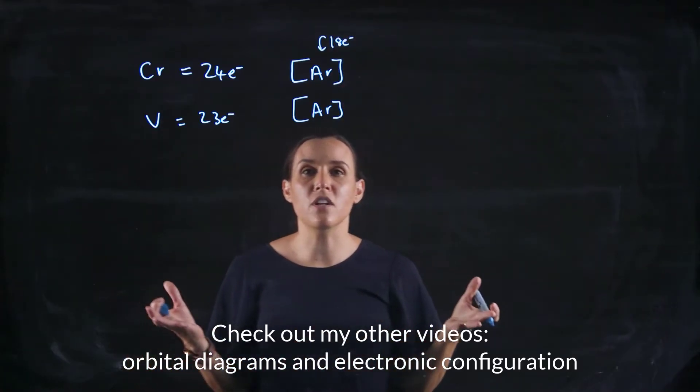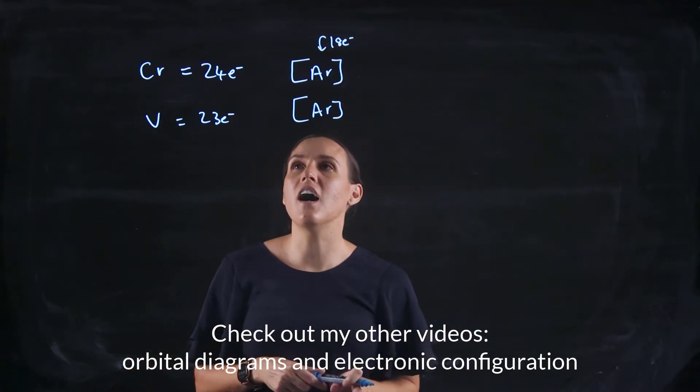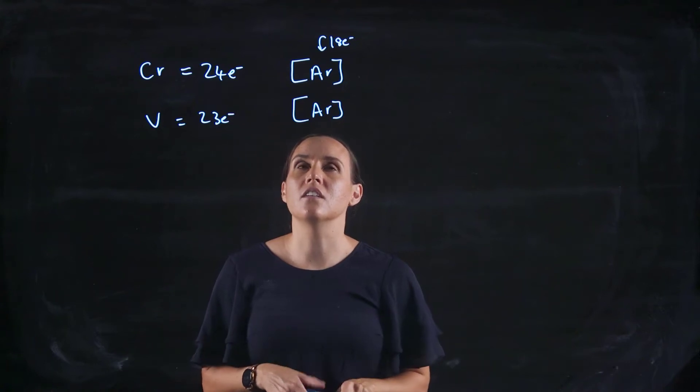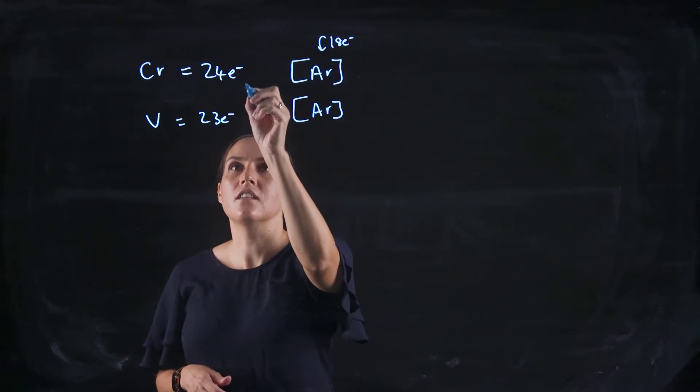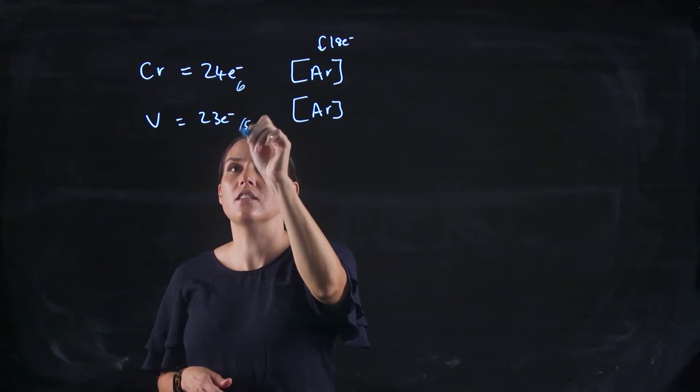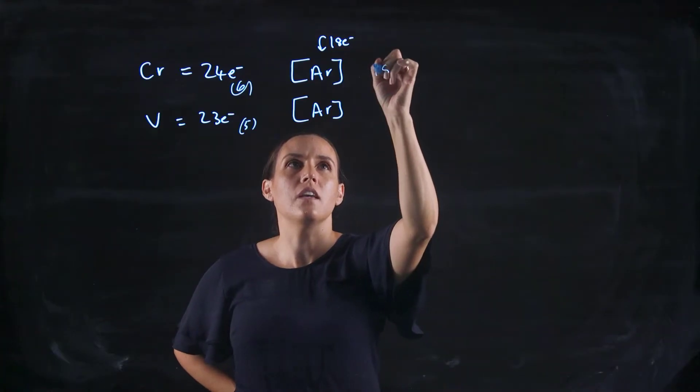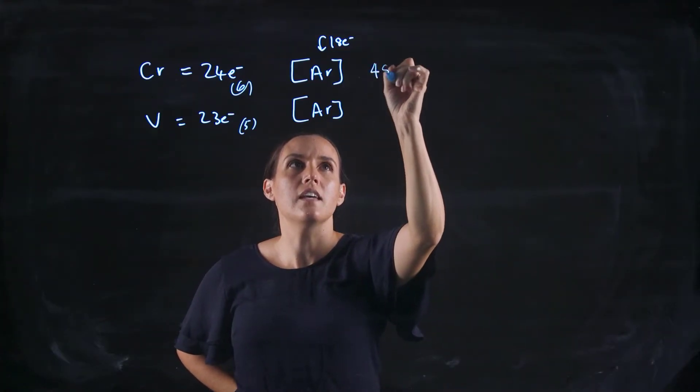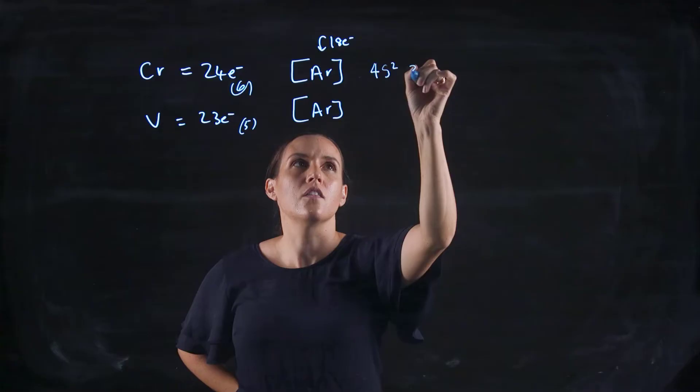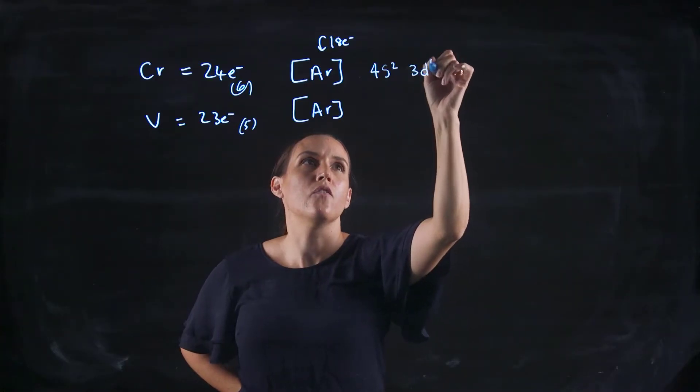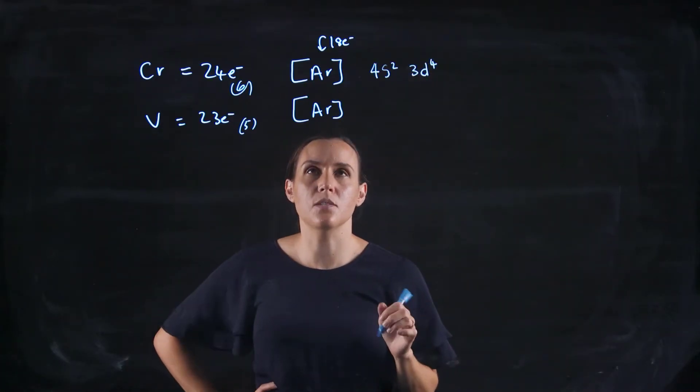So then you're looking at what's different after argon. After argon, I've got 6 electrons here and I've got 5 electrons there that I need to assign. So this one would be, it would be actually 4s2, 3d4.